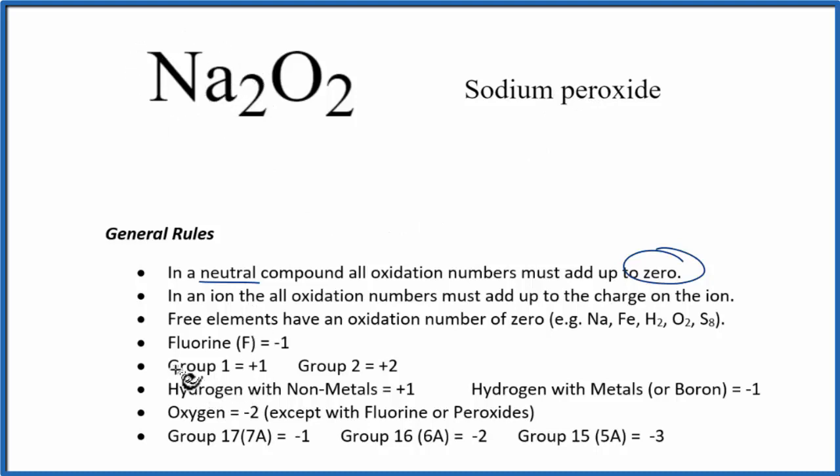Sodium's in group 1 on the periodic table. In group 1, it has a plus 1 oxidation number. Oxygen, we normally think of it being minus 2, having an oxidation number of minus 2, and most of the time it is, except when it's bonded to peroxides, and this is sodium peroxide.